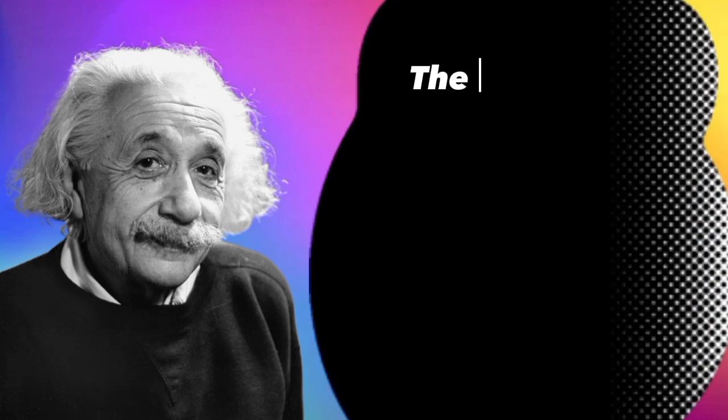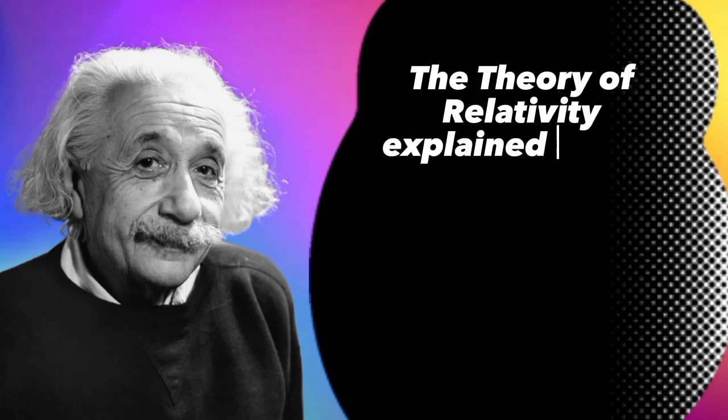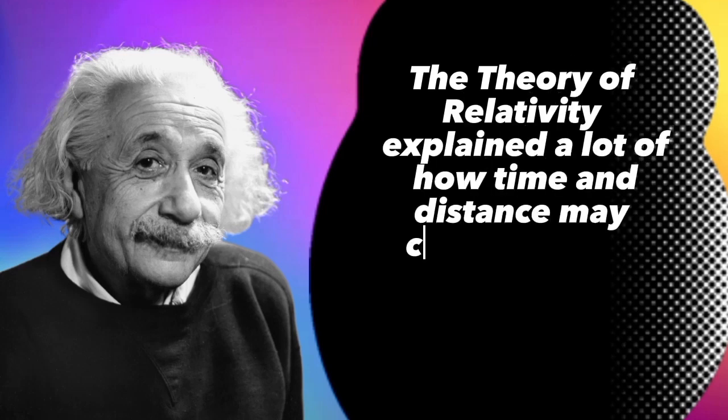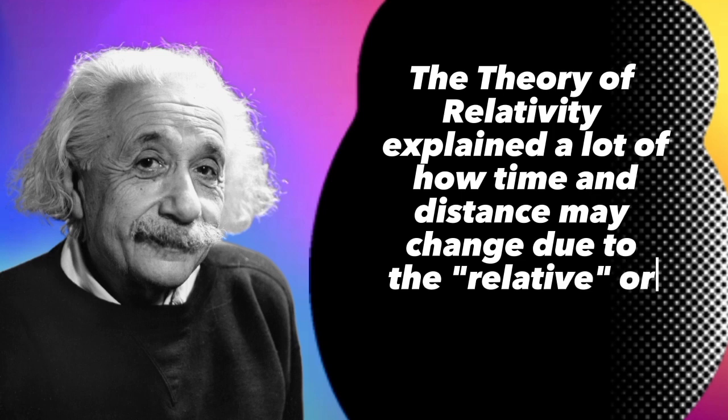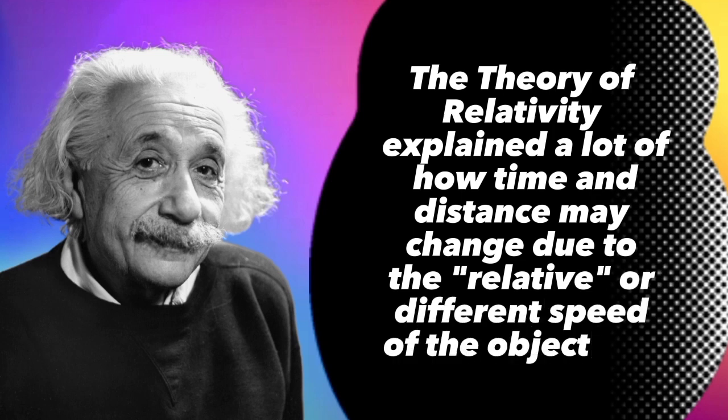The theory of relativity explained a lot of how time and distance may change due to the relative or different speed of the object and the observer.